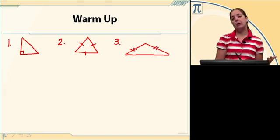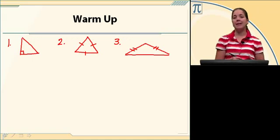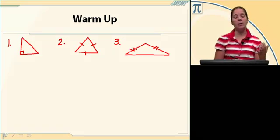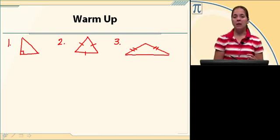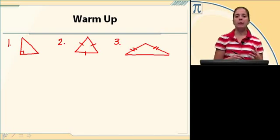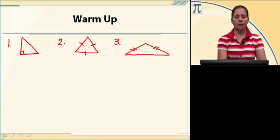Number two is also an example of an isosceles triangle. Isosceles just means at least two sides congruent, so three sides can be congruent. The equilateral is just a little bit more specific — it's saying that all three are congruent. Isosceles is at least two are congruent.